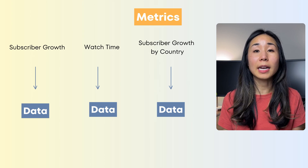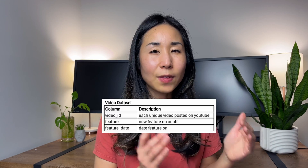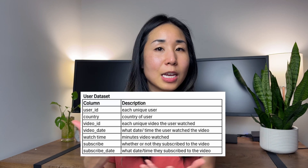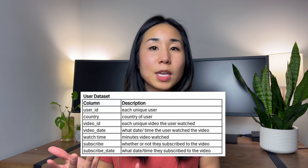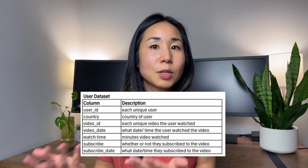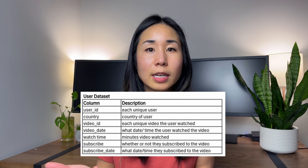I don't know what data is available yet, but I know that for calculating subscriber growth I'm going to need a video dataset — whether the test feature was on or not — as well as a user dataset that'll give me the metrics of whether or not the user clicks subscribe after the feature was on. Now that I have an idea of the data I need, I have to go find it.